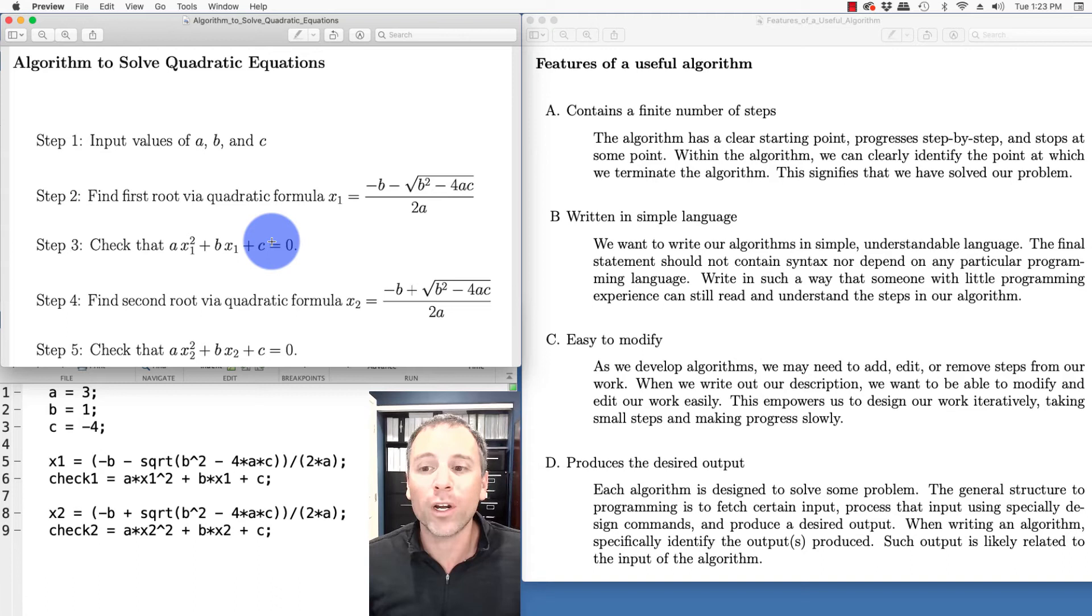The third feature of good algorithms that we're going to use is creating structures that are easy to modify. Computer programming is an iterative process. Another way to say that is oftentimes when solving problems, we do it in steps. We solve a subproblem, make it a little bit more difficult, add nuance, solve a related subproblem, and then do this in a chain until we solve our larger problem.